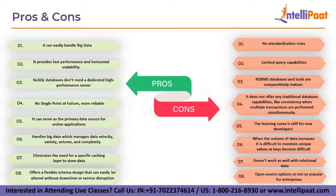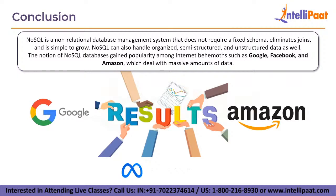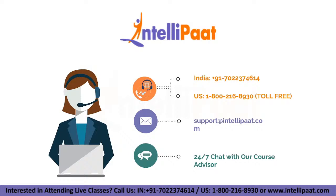With that, we have reached the conclusion. Today we covered what exactly NoSQL is, the types, and some famous NoSQL databases, and also why we are using this technology. NoSQL is a non-relational database management system that does not require a fixed schema, eliminates joins, and is simple to scale. NoSQL can also handle structured, semi-structured, and unstructured data. The notion of NoSQL databases gained popularity among internet giants such as Google, Meta, Facebook, and Amazon, which deal with massive amounts of data. Thank you everyone for watching. Please subscribe to our channel and hit the bell icon for regular updates.